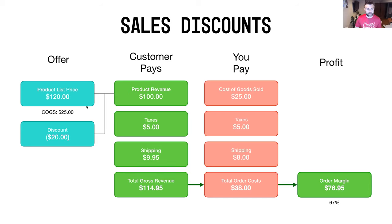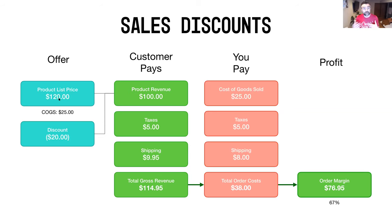If you sold the product at $120 without a discount, the order margin would increase because COGS, taxes, and shipping stay the same — you'd just gain an extra $20 on product margin. Sales discounts can also be percentage-based: 10% of $120 is $12, or 20% is $24. You can experiment with percentages or absolute numbers — it's really up to you and what works best for your business.